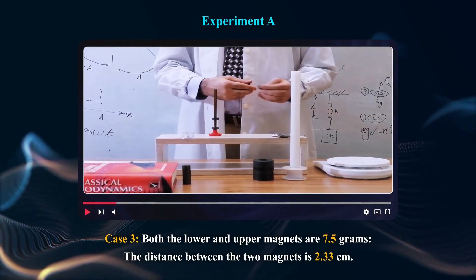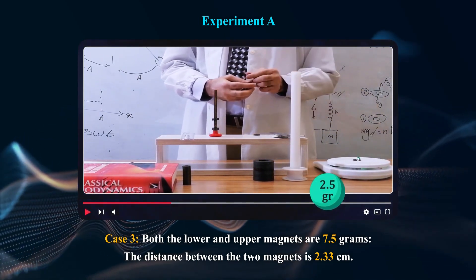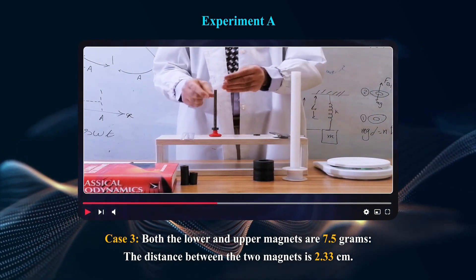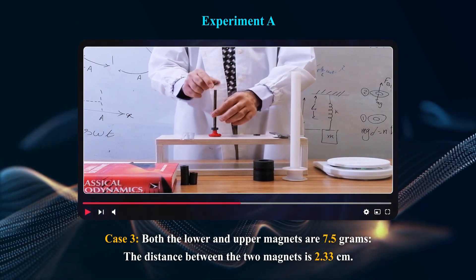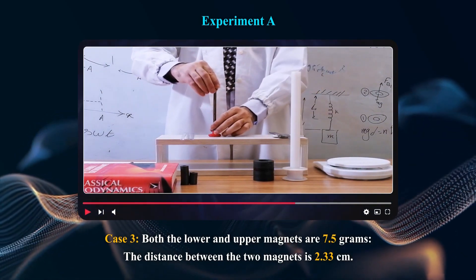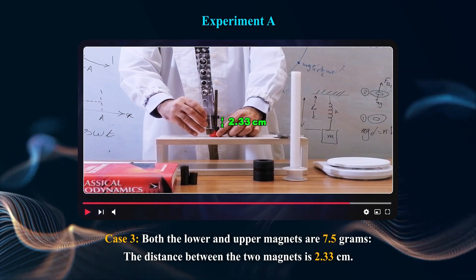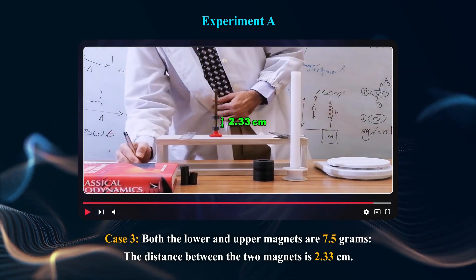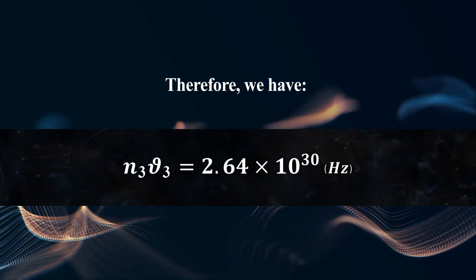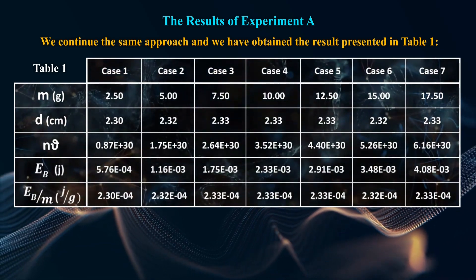Case 3: Both the lower and upper magnets are 7.5 grams. The distance between the two magnets is 2.33 cm. Therefore we have the corresponding values. We continue the same approach and the results are presented in Table 1. Based on the above experiment, it can be concluded that there is a consistent pattern.